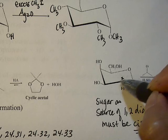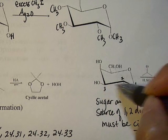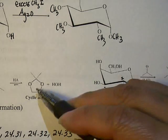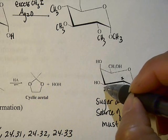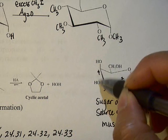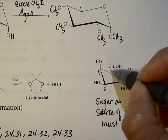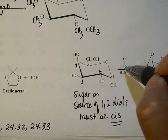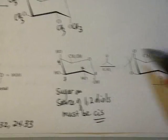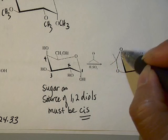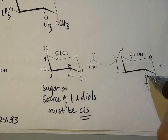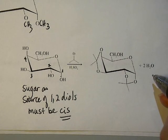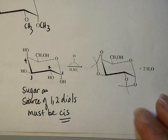On carbon one and two, both OHs are pointing down, so they're cis to each other. But between carbon two and carbon three, one is pointing up and one is pointing down, so they're trans — the alcohol on C2 and C3 cannot form a cyclic acetal. Between carbon three and carbon four, both are pointing up, so they can form a cyclic acetal. So what happens is that C3 and C4 will form one cyclic acetal and C1 and C2 will form another, driving off two water molecules.